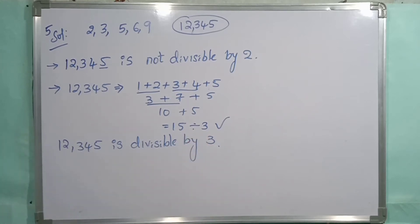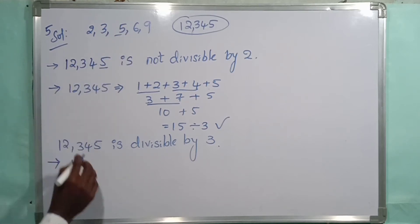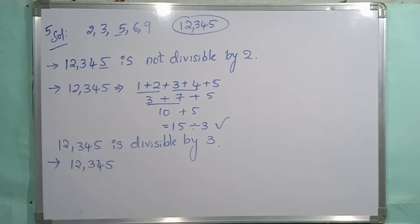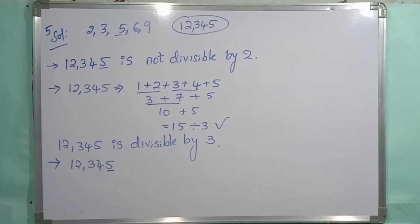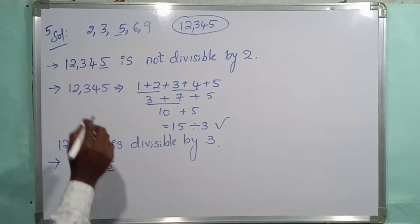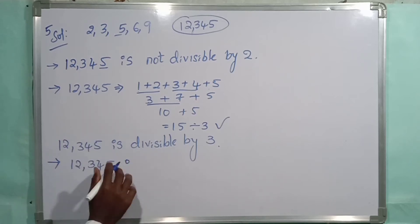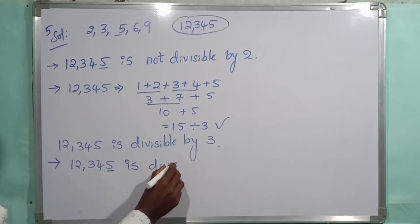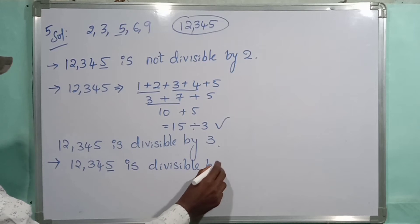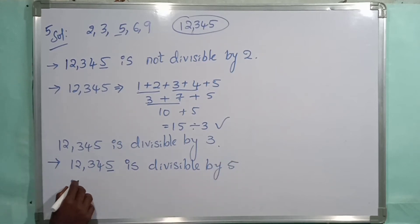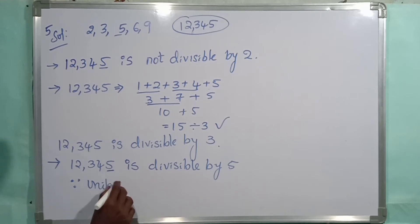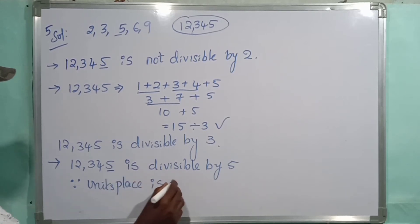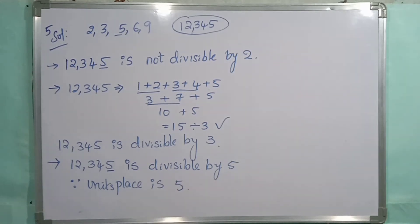Now we are moving to 5. For 12345, the divisibility rule for 5 is that the units place should be 0 or 5. Here the units place is 5, so 12345 is divisible by 5, since the units place is 5.